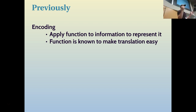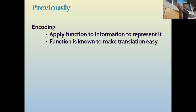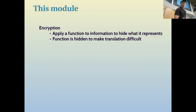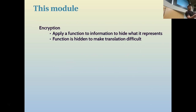The thing about encoding is that it's all out in the open — it's not meant to actually trick you. Once you know the function, you can figure out what the meaning of that data is. But today we're going to talk about encryption. The idea here is to also apply a function to the information you're representing, but you want to hide that function so that people can't understand what that information is. So that's encryption.